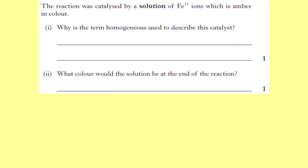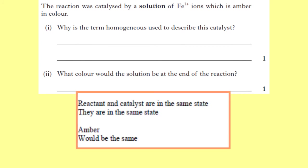Past paper question: a reaction was catalysed by a solution of iron(III) ions, which is amber in colour. First, why is the term homogeneous used to describe this catalyst? The answer is that the reactant and catalyst are in the same physical state. Second, what colour would the solution be at the end of the reaction? The answer is amber — because a catalyst is not used up, and if it was amber at the start it will return to amber at the end.